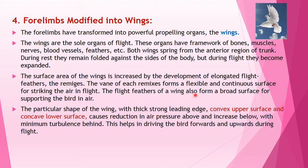The flight feathers of a wing form a broad surface for supporting the bird in air. The particular shape of a wing, with a thick strong leading edge, causes the upper surface to be convex and the lower surface concave. This causes reduction in air pressure above and increases pressure below with minimum turbulence behind, driving the bird forwards and upwards during flight.